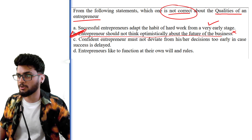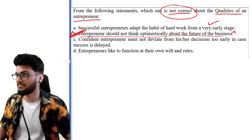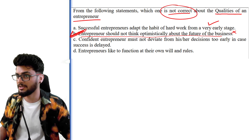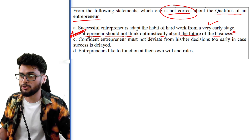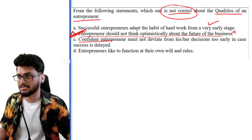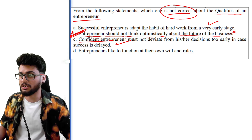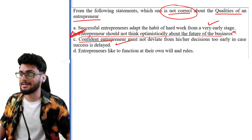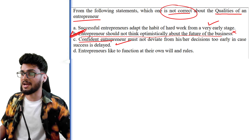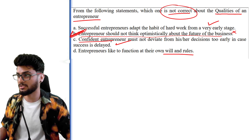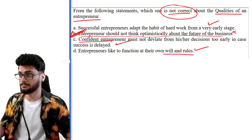'A confident entrepreneur must not deviate from his or her decisions too early' — yes, entrepreneurs are confident, so this is a right statement. 'Entrepreneurs like to function at their own will and rules' — meaning they are independent, they can work any time. So this is also right.